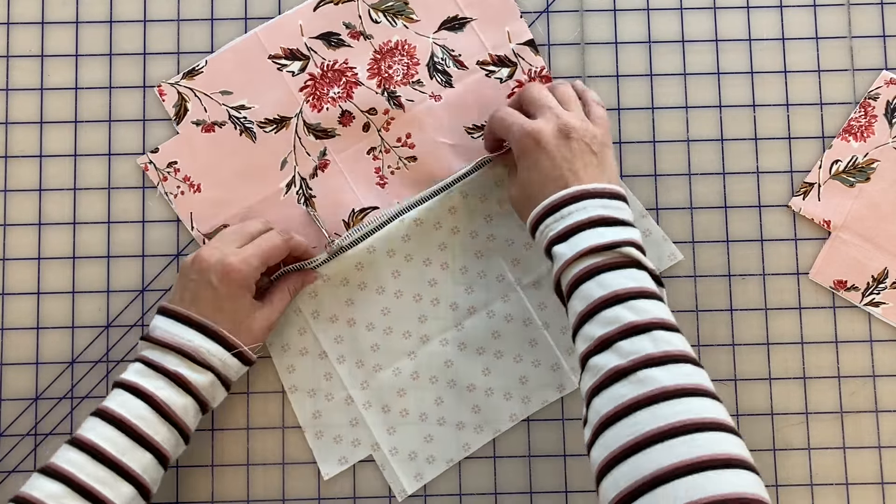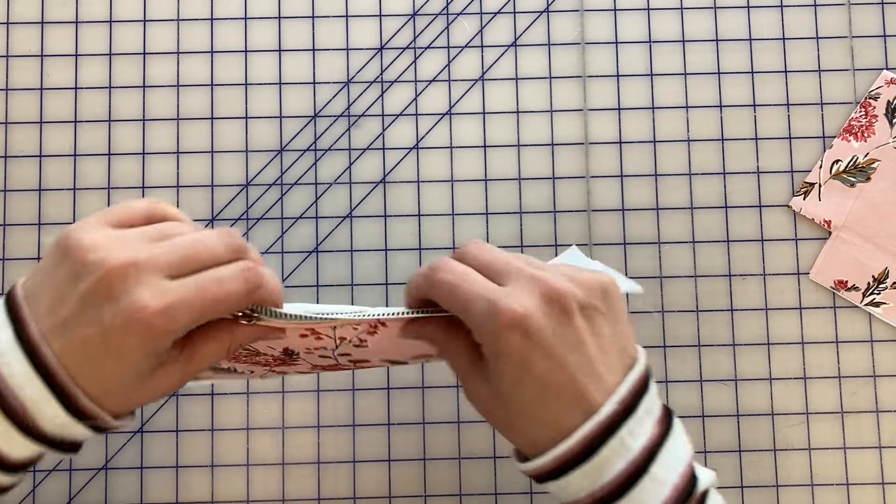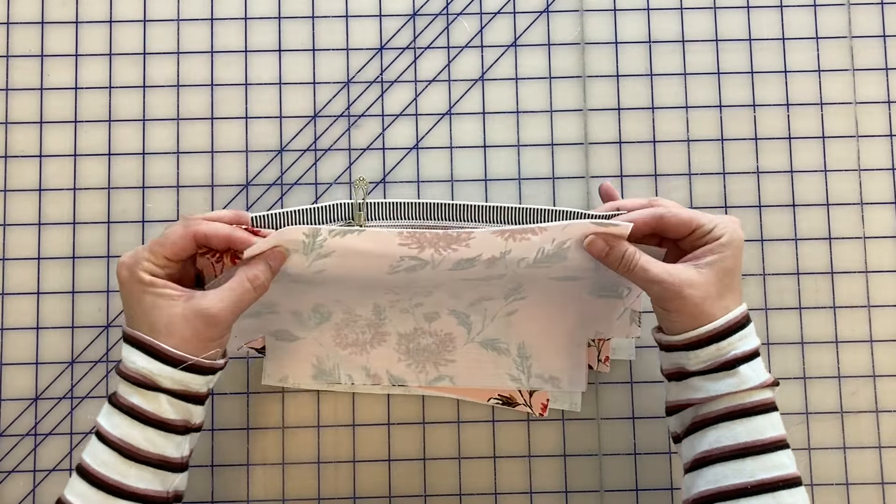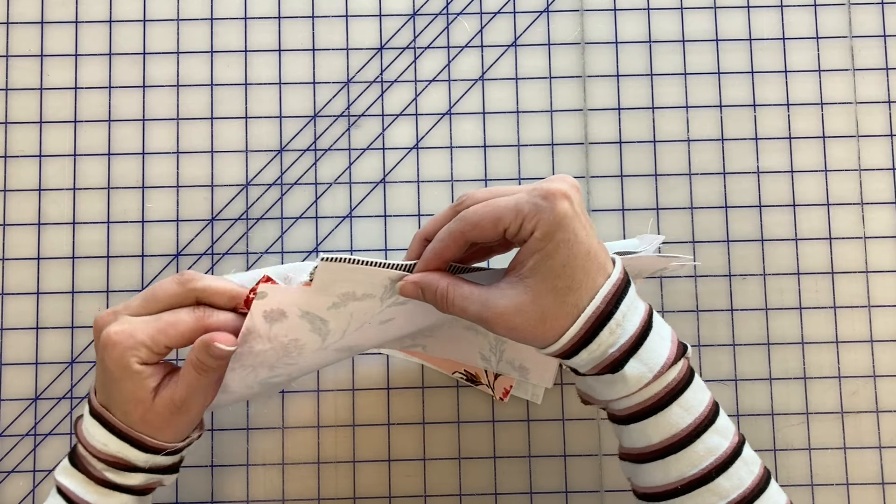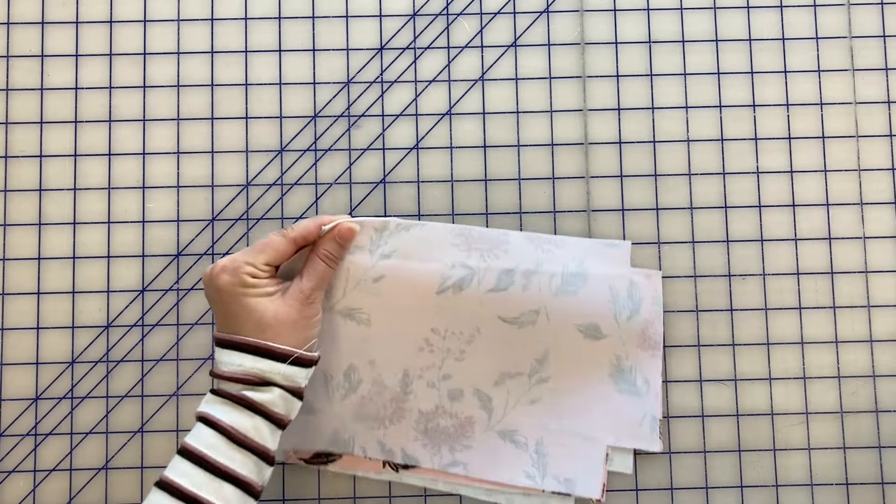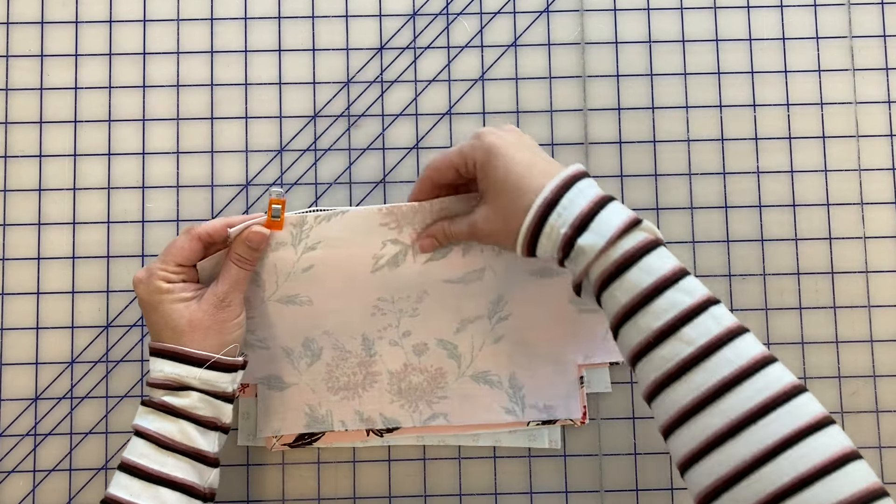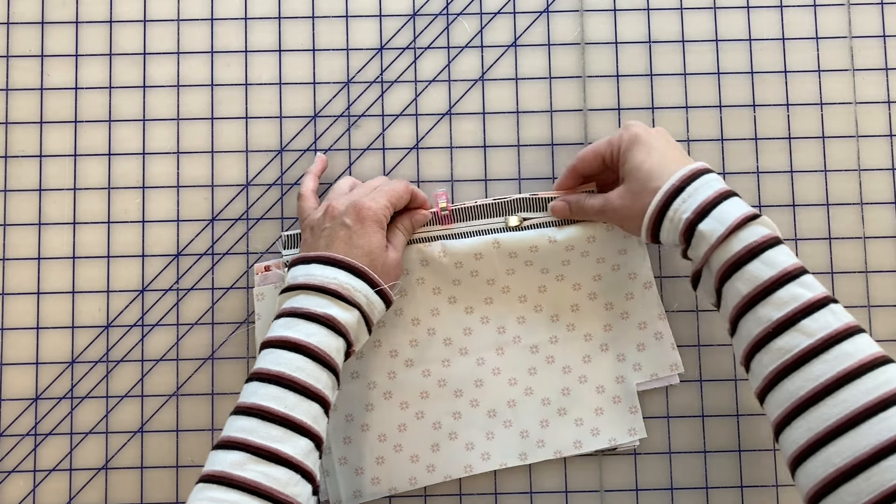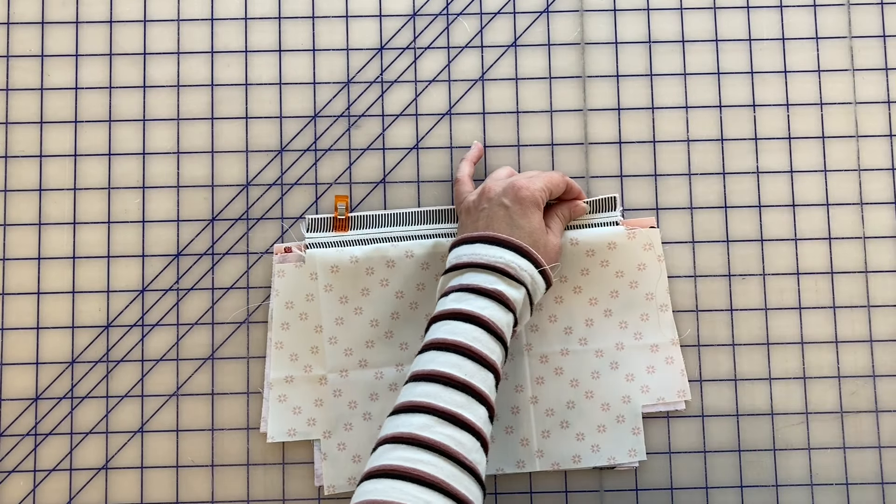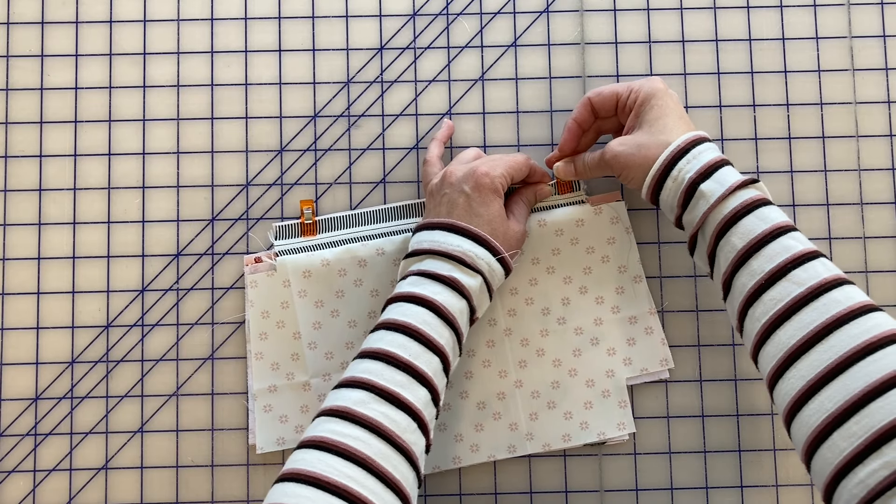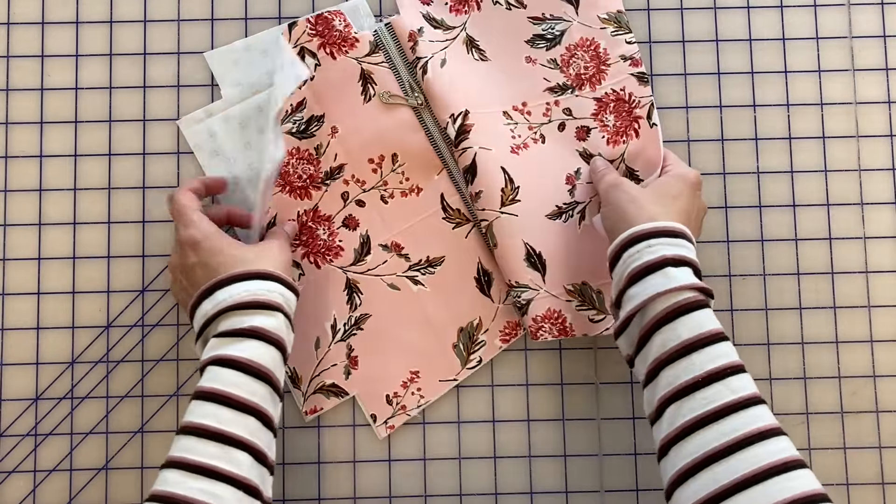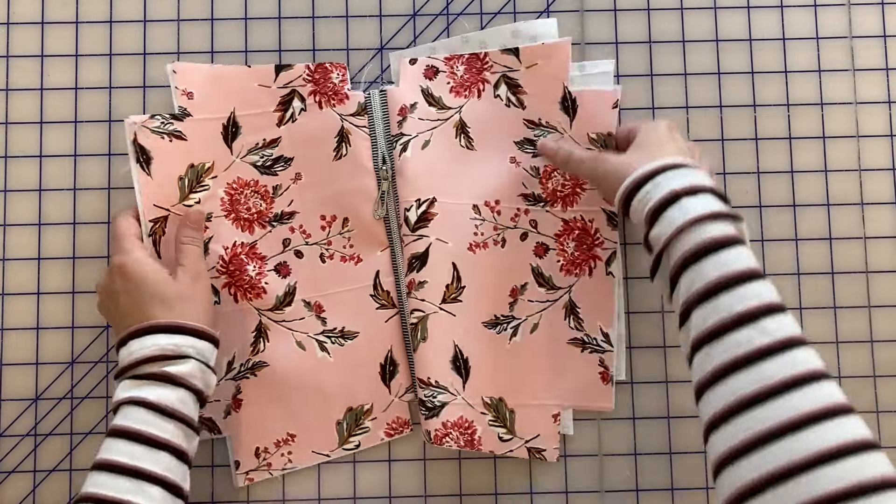Okay, so I've got it stitched and I'm going to close up my zipper and do the same on the other side. So I have now got my pieces all sewn and we are going to flip it out like this.